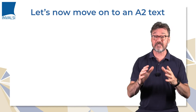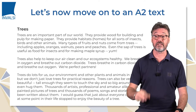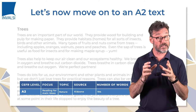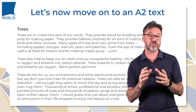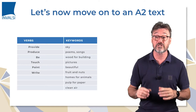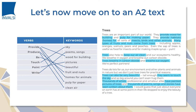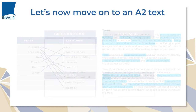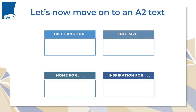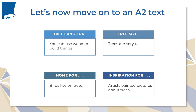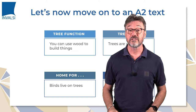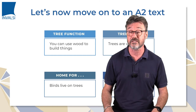Let's now move on to an A2 text entitled 'Trees.' The text is an authentic article. The topic is concrete and related to the environment. As a comprehension activity, we're going to give students a list of verbs and keywords from the text in a random order. Students have to match them according to the information in the text. We then ask students to organise the information in categories: tree function, tree size, home for, and inspiration for — writing short simple sentences about trees for each category using their own words. You can pause the video and use the links below to download the text and all the activities just described with answer keys.